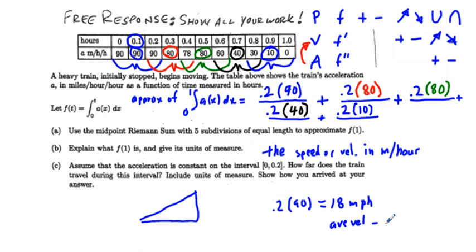So we had 9 miles per hour. And we did that average velocity 9 times 0.2 hours. So we're going to have 1.8 miles.